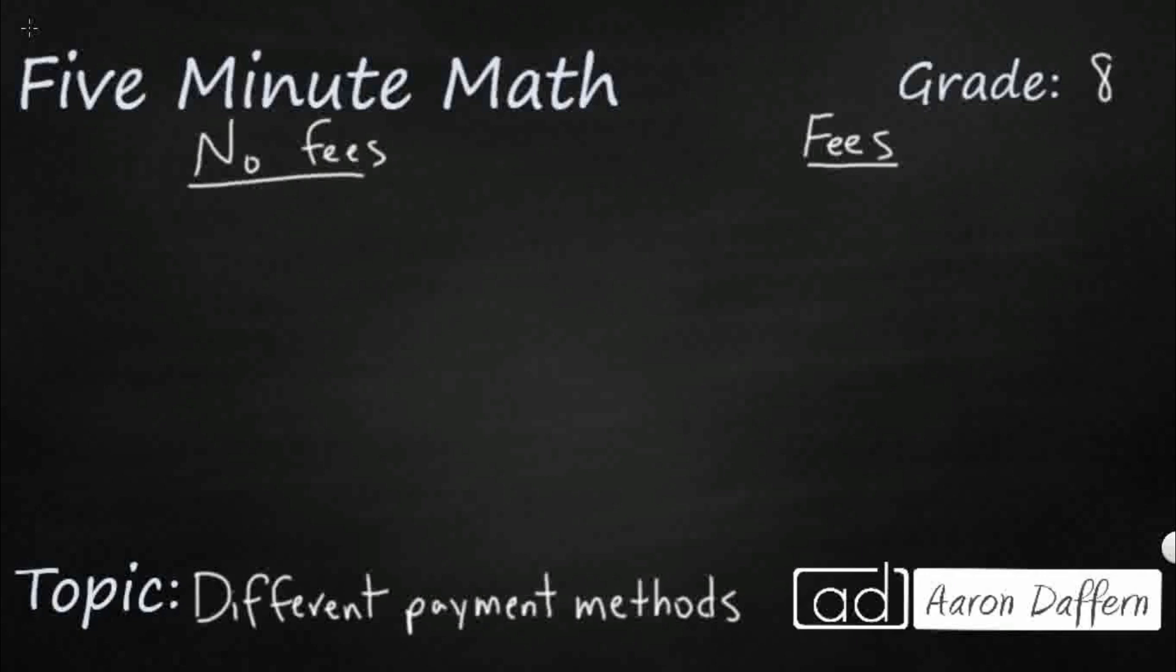So probably one of the easiest ways is cash. A lot of us like cash. Now there are some advantages and disadvantages. So cash is there's absolutely no fees, and it's instant and it's usually pretty easy.